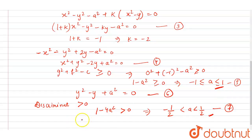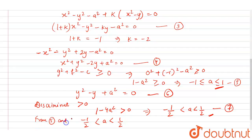From equations 5 and 7 combined, we get the final result: a must lie between minus 1/2 and 1/2. From this we can say that Statement 1 is true. Hence true. Thank you and have a nice day, hope you all understand this question.